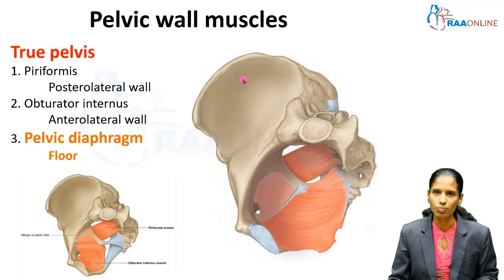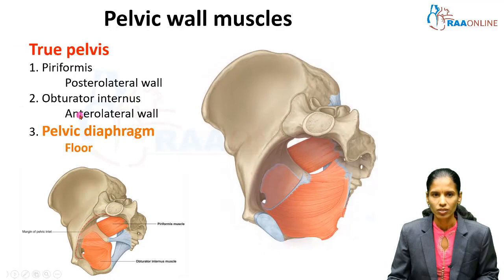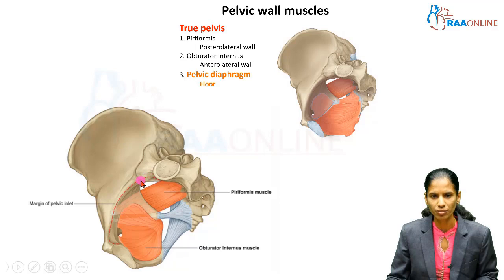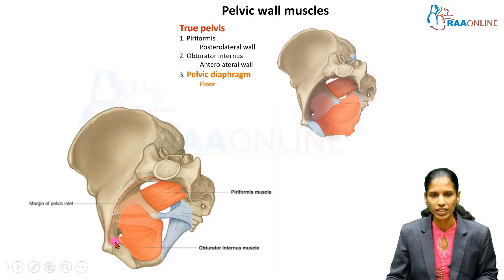First we will see what muscles are present within the pelvic wall. For that you should know what is the true pelvis. The true pelvis is the pelvic cavity present below the pelvic inlet. The pelvic inlet is formed posteriorly in the midline by the promontory of the sacrum, on either side by the anterior border of the ala of sacrum, the arcuate line of the iliac bone, the iliopectineal line, and the pubic crest. The dotted red line represents the pelvic inlet.